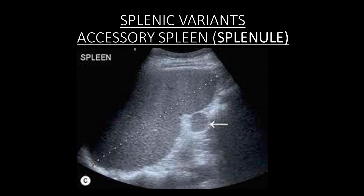There are splenic variants detectable on ultrasound. One is the accessory spleen or splenules, estimated in almost 20% of cases. Accessory spleens are usually found in the region of the tail of the pancreas at the hilum and may mimic a tumor on ultrasound. A technetium sulfur colloid scan can be beneficial, since uptake of colloid indicates phagocytic activity, confirming it is an accessory spleen and not a tumor.